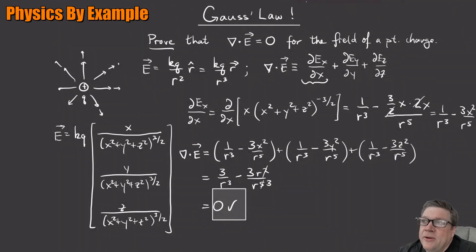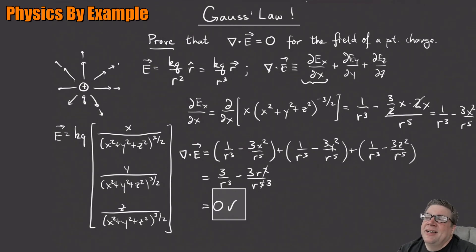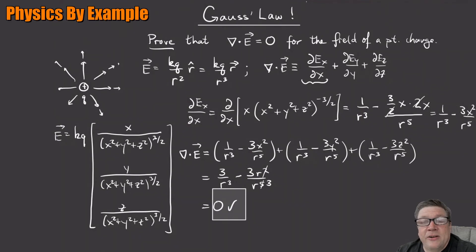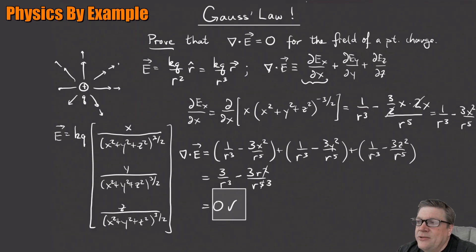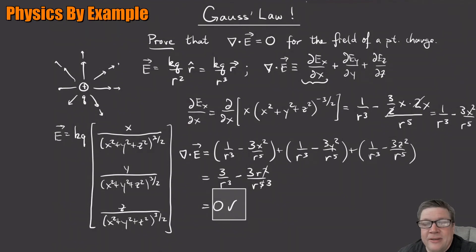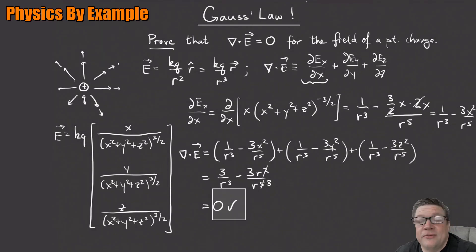Even though at first glance the electric field from a point charge looks like it's spreading apart, so your naive understanding of divergence might be that you'd expect this field to have a divergence - it turns out that it doesn't, for a really interesting reason: the spreading of those arrows is exactly counterbalanced by the fact that the arrows get shorter, meaning this vector field has no divergence. This is the proof - something essential to everything we do with Gauss's law, but it's seldom that you'd actually see it proven with the differential form. I thought it's kind of a valuable thing to go through.